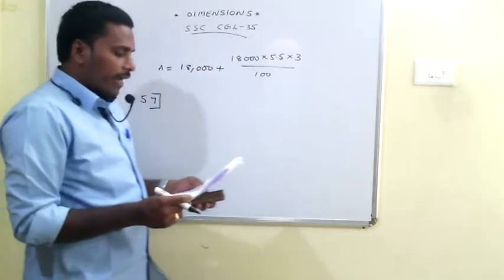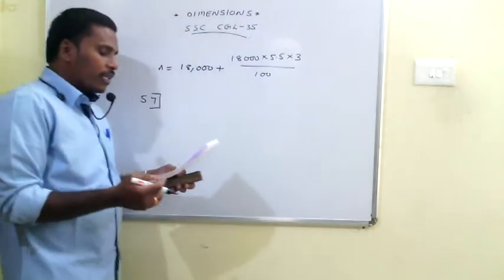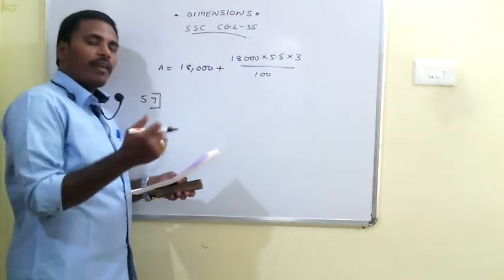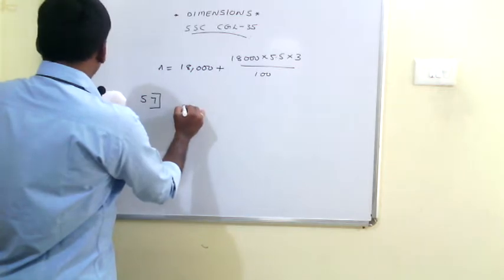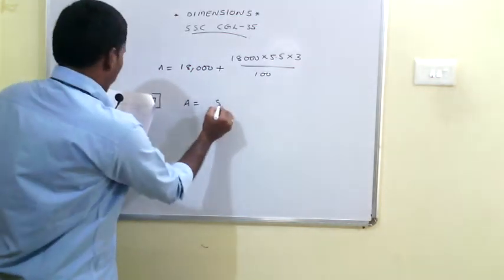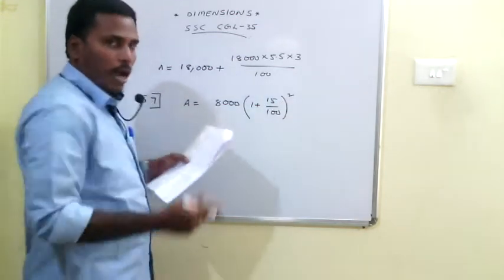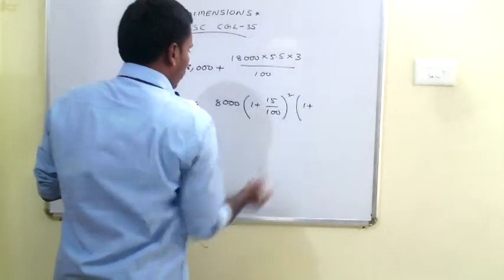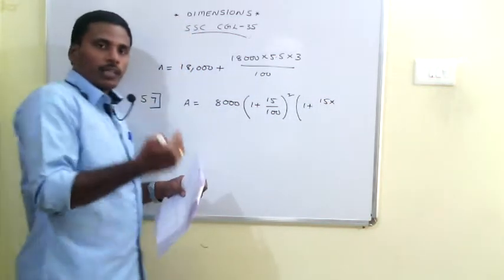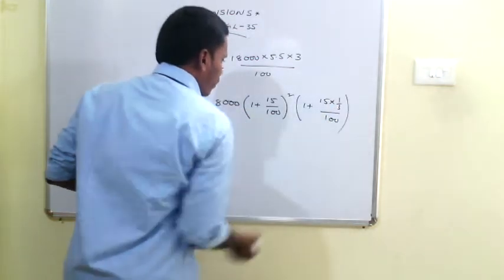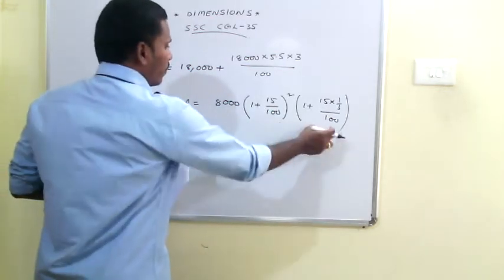The 57th problem: find the compound interest on 8,000 rupees at 15% per annum for two years four months, compounded annually. The time period is two years four months, so we calculate for two years first, then the remaining four months. The amount formula is 8,000 × (1 + 15/100)² × (1 + (15 × 1/3)/100), since four months is one-third of a year.